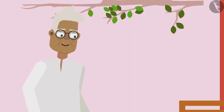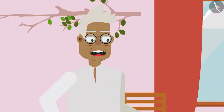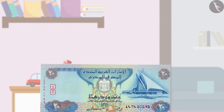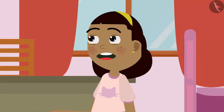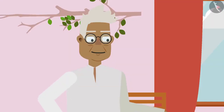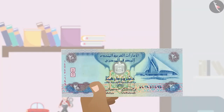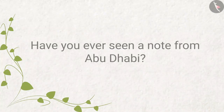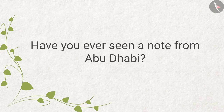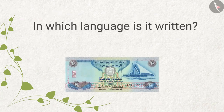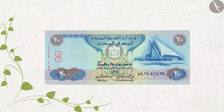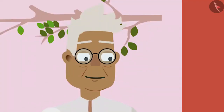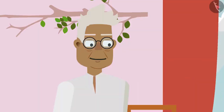Just then grandpa comes into her room. 'Zia, a new jalebi shop has opened in the street. I came to take you to eat jalebis, but you seem to be very busy. What is that in your hand?' Zia says, 'Grandpa, I am looking at the note from Abu Dhabi given by dad.' Grandpa replies, 'In which language is it written? This is Arabic, Zia, and this note is of one dirham. Dirham is the currency of the UAE, just like we have rupees here.'